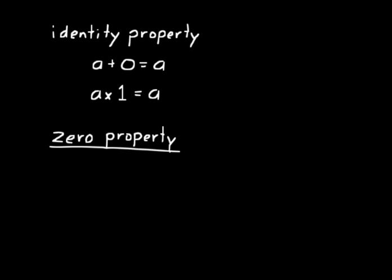Lastly, let's talk about the zero property — this is probably something you already know. Any number A times zero equals zero. That just works for multiplication, so that's the zero property for multiplication: any number times zero equals zero.